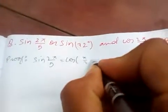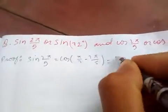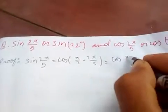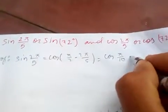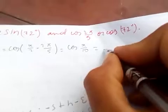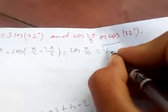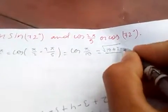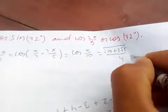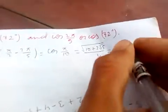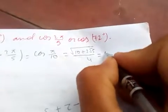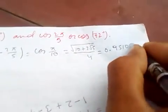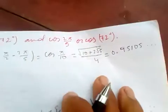Sine of 2π/5, in terms of cosine, is cos(π/2 - 2π/5). If you simplify this, you get π/10. We know cos(π/10) is √(10 + 2√5) / 4, and if you calculate this it is approximately 0.95105.